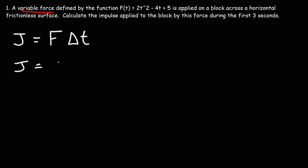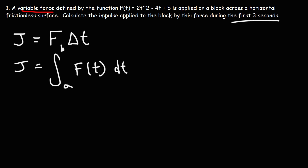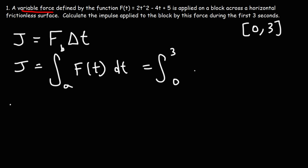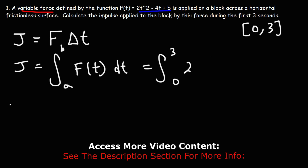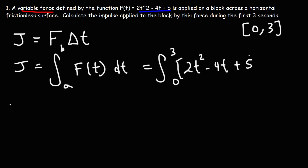The impulse is also equal to the definite integral of the force function with respect to time from a to b. We need an interval, and we want to calculate the impulse during the first 3 seconds, so that is from 0 to 3. The impulse is the integral from 0 to 3 of 2t² - 4t + 5 with respect to t.